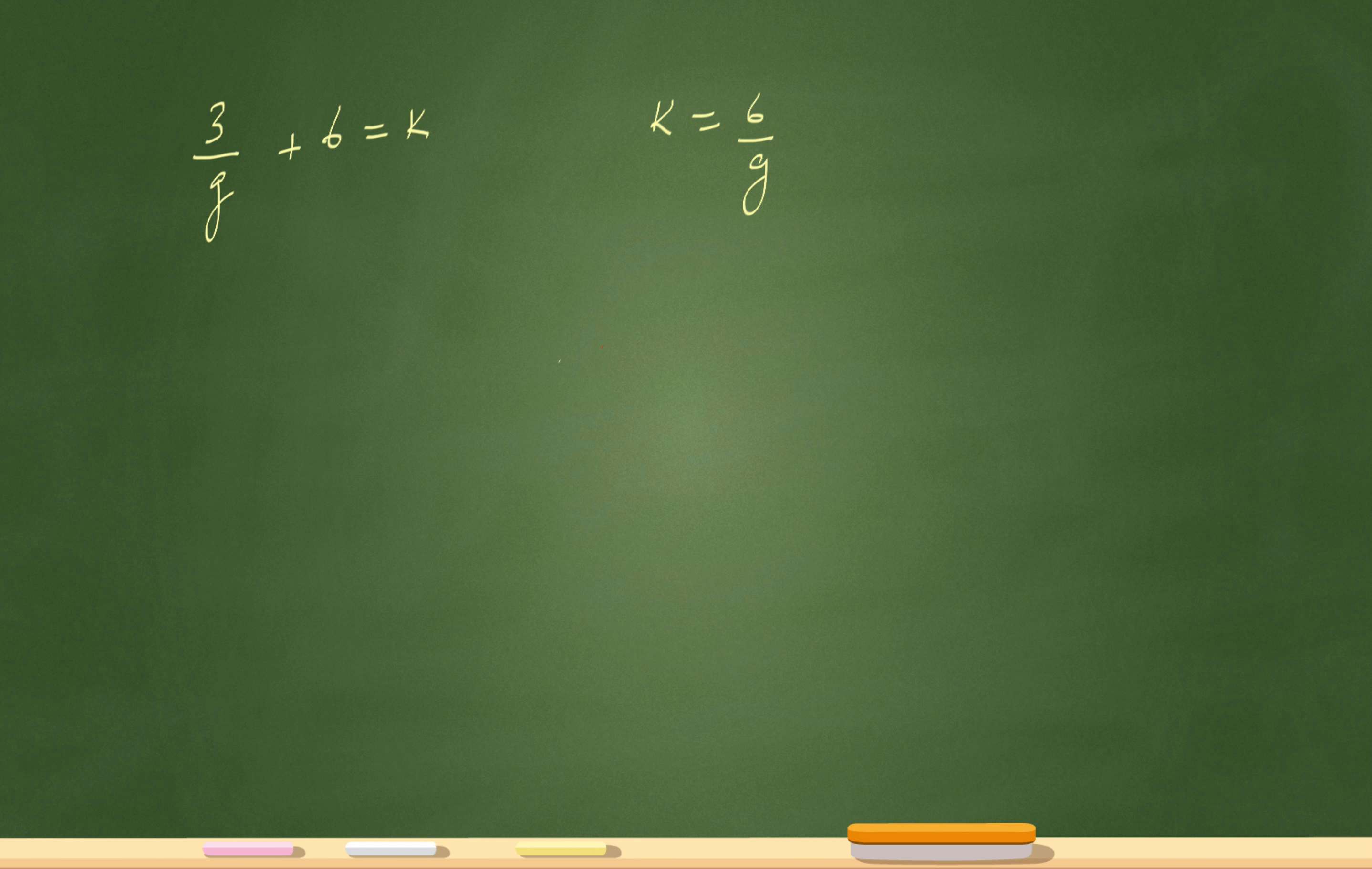This particular problem I'm giving two equations: 3 over g plus 6 equals k, and k equals 6 over g. The question is asking me to solve for the value of g.